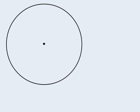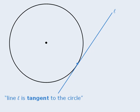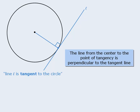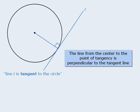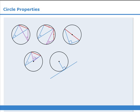Here's one last property. It begins with a definition. If we have a line that touches a circle at only one point, then we say that that line is tangent to the circle. Now, if we draw a line from the center of the circle to the point of tangency, then this line will be perpendicular to the tangent line. So we will say that the line from the center to the point of tangency is perpendicular to the tangent line. That wraps up circle properties. In this lesson, we learned five circle properties that you need to know.